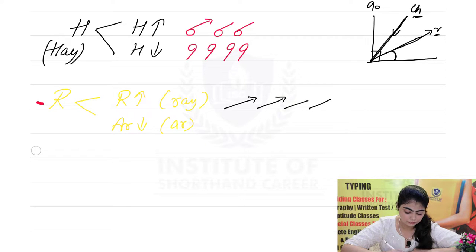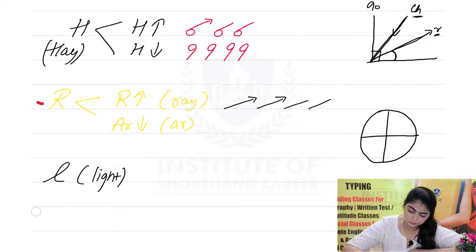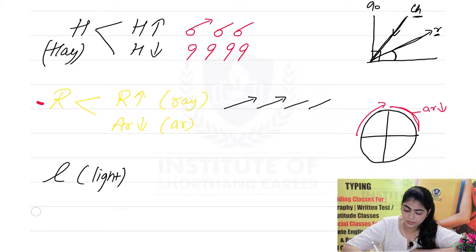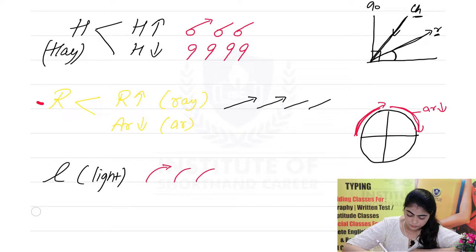The next letter is L — L is a light stroke. It is taken from a circle. This part of the circle is L, and the AR down is the other direction from the same circle. You make L like this. This was the last section of the upward strokes.